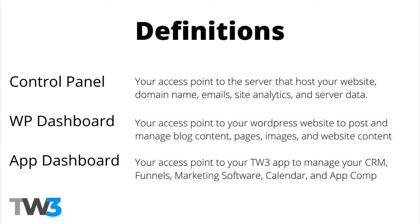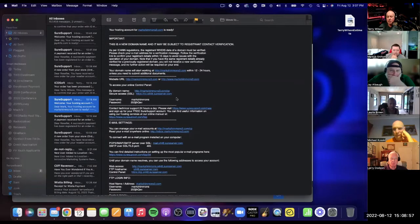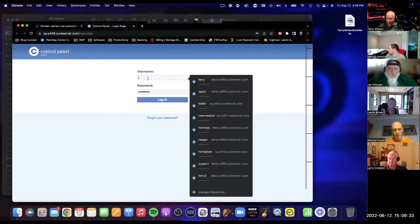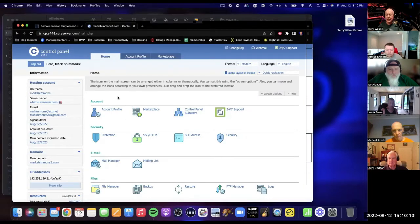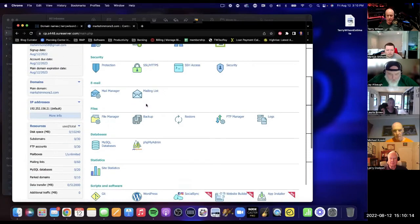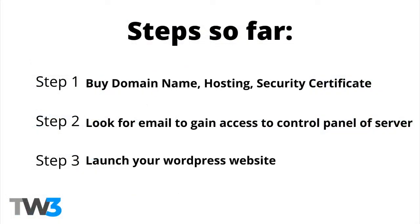The control panel is your access to the server space you just bought. It gives you access to look at your website, your email addresses, your traffic, and other software pieces we'll be releasing in coming months. If you've got an independently hosted website with us, you'll have access to those as well. This email gives you access to your control panel. Step three: launch your website right here — just click 'Launch your WordPress website.'